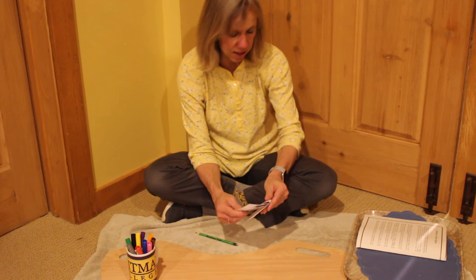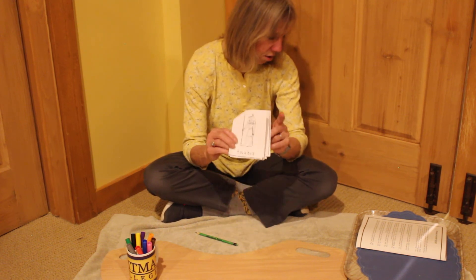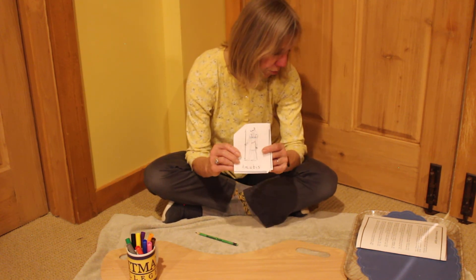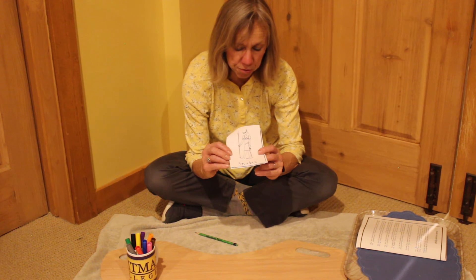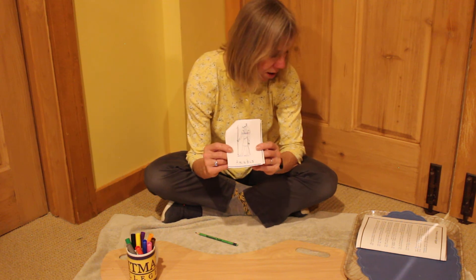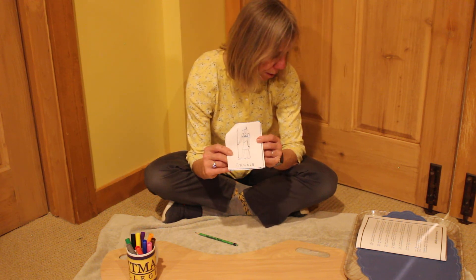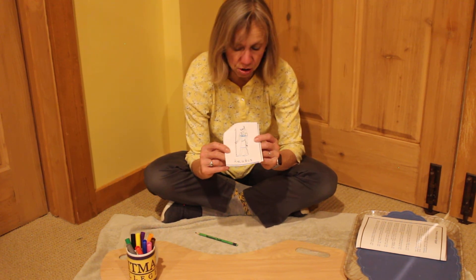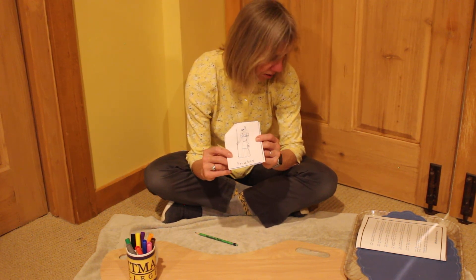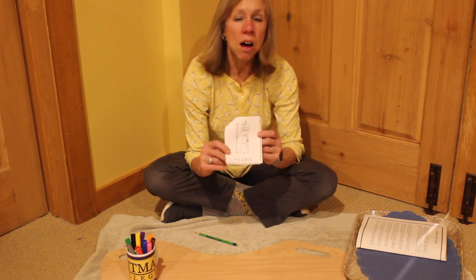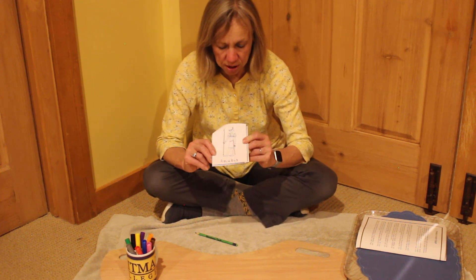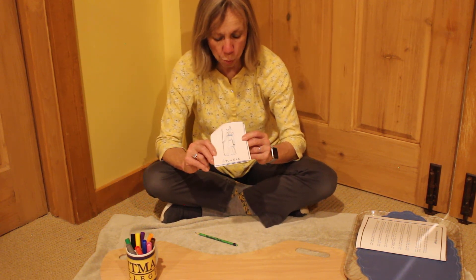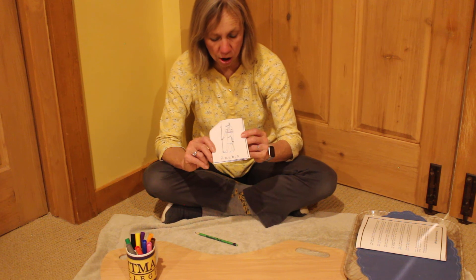Anubis was the god who performed the ceremonies of becoming a mummy and protected all the cemeteries. He was shown with the head of a jackal, which in ancient Egyptian times was a wild dog.